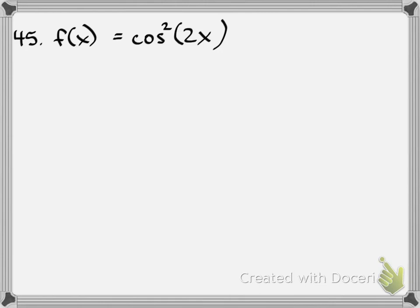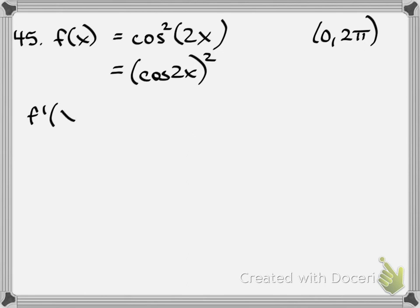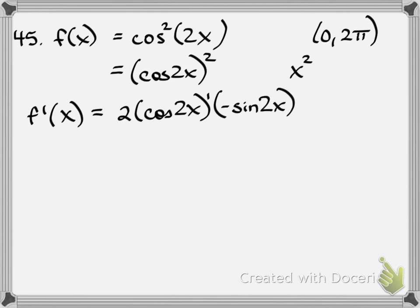That brings us to problem 45. I'm going to do this one as a trick question. It says consider the interval from 0 to 2π, find the open intervals on which the function is increasing or decreasing, and apply the first derivative test to identify all relative extrema. We need to take the derivative, but before we do, we should write the function in a friendlier form. The cosine squared function will be treated like x squared — this is a chain rule problem. So it's 2 times cosine of 2x to the first power, times the derivative of cosine of 2x, times the derivative of the angle.